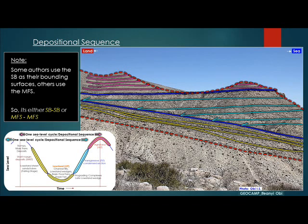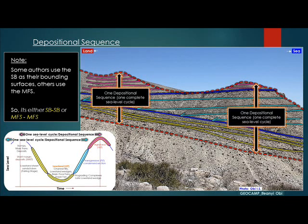Different authors use different surfaces to define the limits of the depositional sequence. Some go with sequence boundary to sequence boundary (SB to SB), or the maximum flooding surface to another maximum flooding surface (MFS to MFS). The idea in this section is to demonstrate that one depositional sequence is a record of one complete sea level cycle and comprises at least two, and in some cases all three, systems tracts preserved.